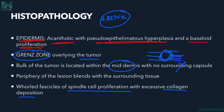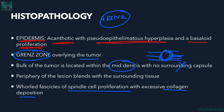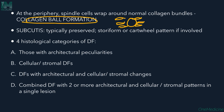Spindle cell proliferation with excessive collagen deposition is seen in the dermis. At the periphery of the lesion, spindle cells wrap around normal collagen bundles, forming collagen ball formation. In the subcutaneous tissue there is no significant change, but a storiform cartwheel pattern may be present if involved.